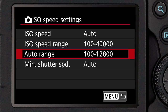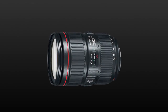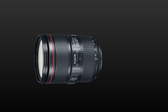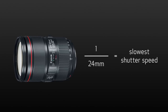When you go to set the minimum shutter speed, you'll have two choices on the menu. The first item is Auto. By default, Auto is going to look at the lens you have on the camera and set 1 over the focal length of that lens as the slowest shutter speed available. For example, if you were shooting with a 24 millimeter lens, it's going to say about 1/30th of a second would be the slowest shutter speed we can use.